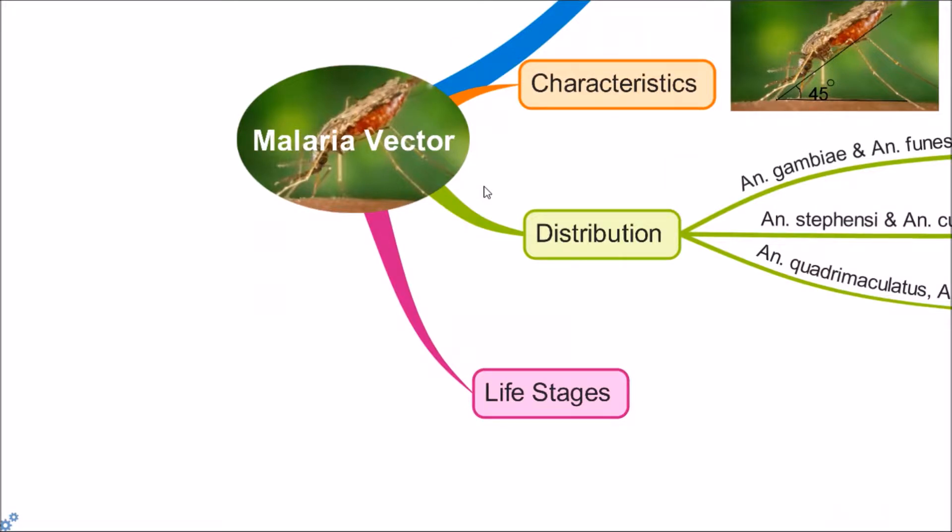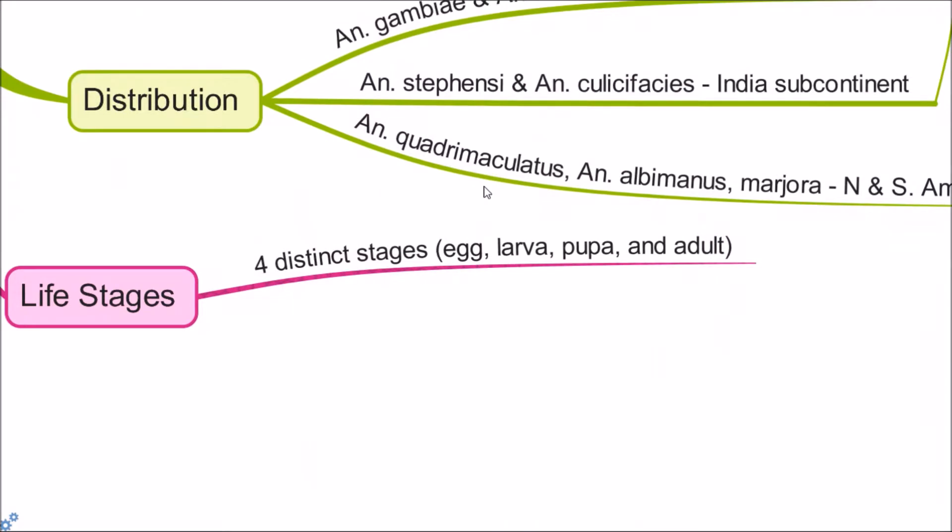Life stages of Anopheles mosquitoes. Like all mosquitoes, Anopheles go through four stages in their life cycle: egg, larvae, pupa, and adult.